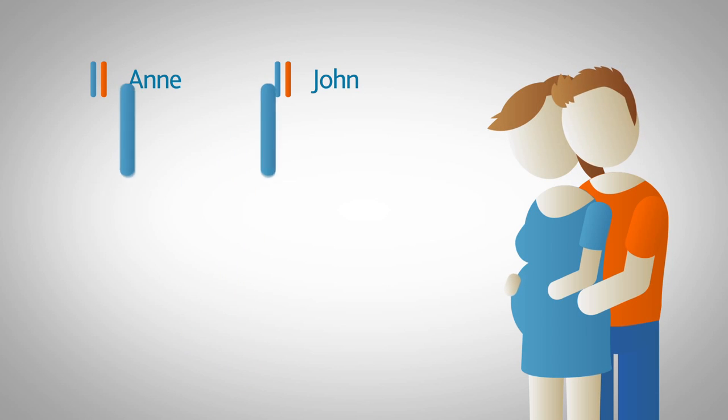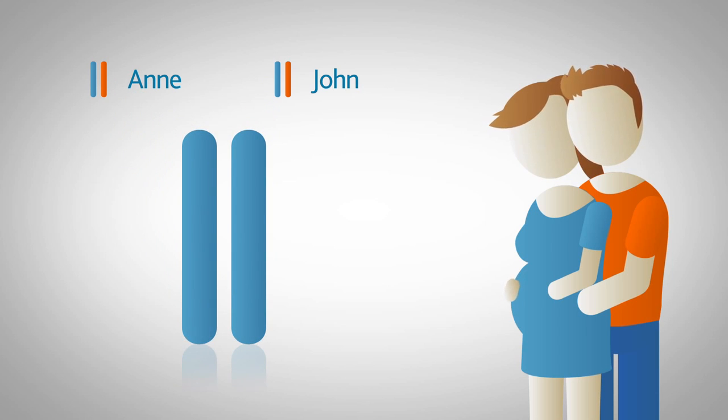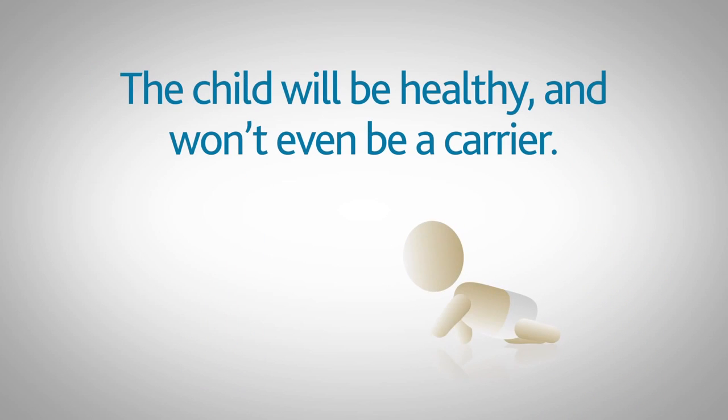If Anne and John both pass on the working copy of the gene, the child will be healthy and won't even be a carrier.